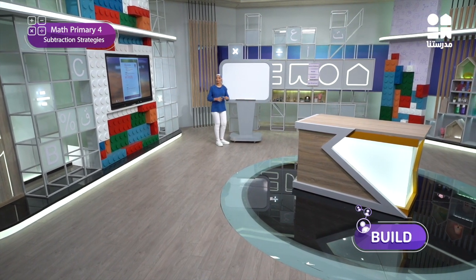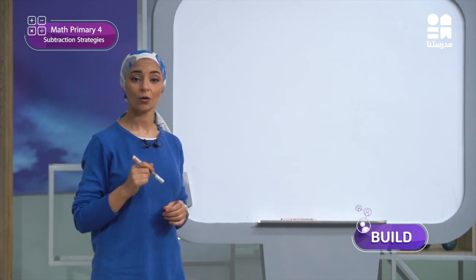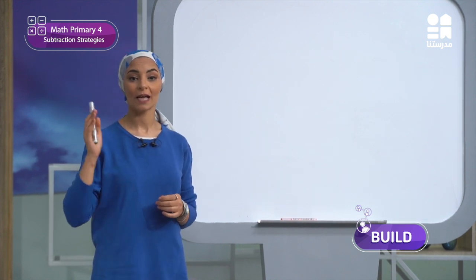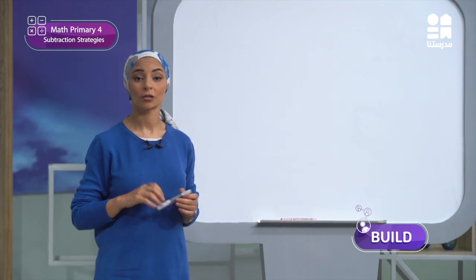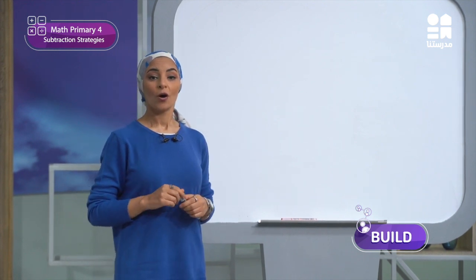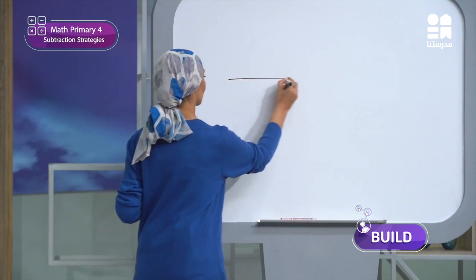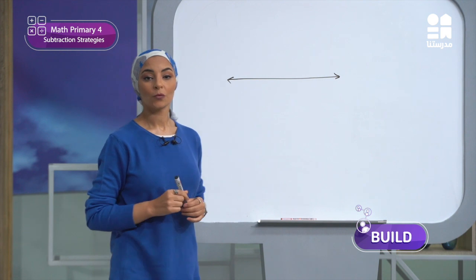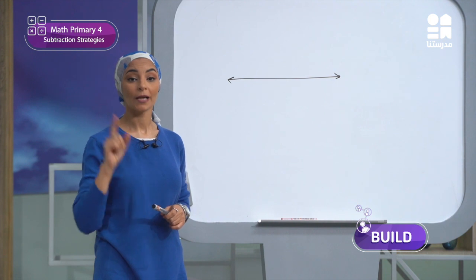Here is the number line. I will draw a number line here. Here the number line we have studied is labeled, so the numbers are written on it. I'm sure you know that as we move to the right the numbers increase, and when we move to the left the numbers decrease.